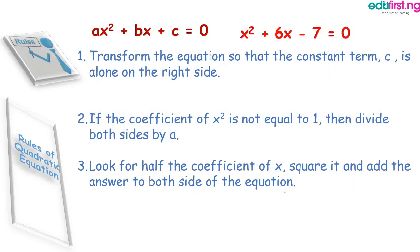We go by the rules which says rule one: transform the equation so that the constant term c is alone on the right hand side. For instance, we have equation one, we have equation two.